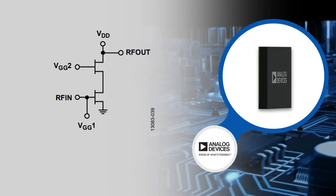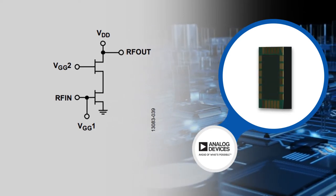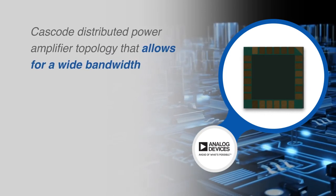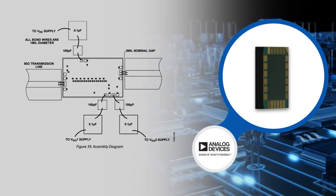The HMC1126 is a cascode distributed power amplifier that uses a fundamental cell of two FETs in series, source to drain. This fundamental cell then duplicates a number of times. The major benefit of this is an increase in the operation bandwidth.